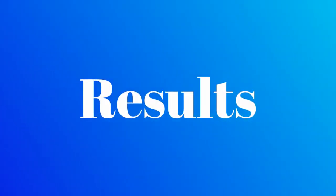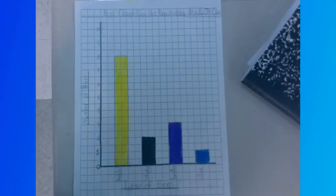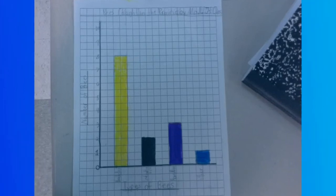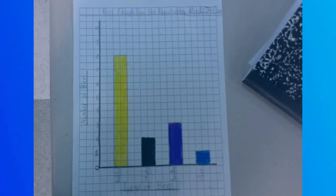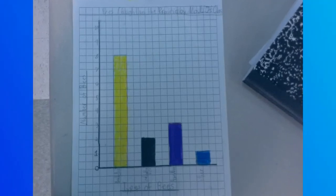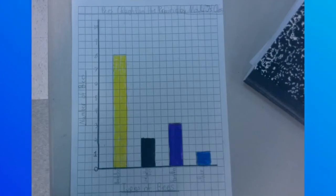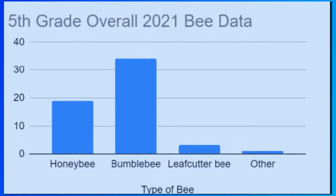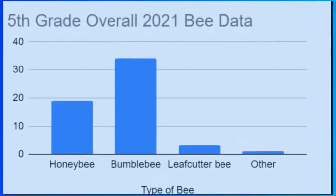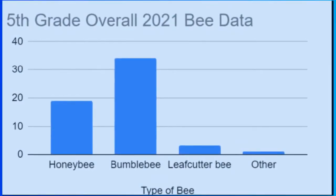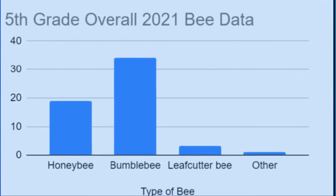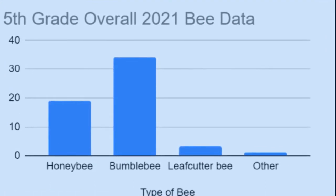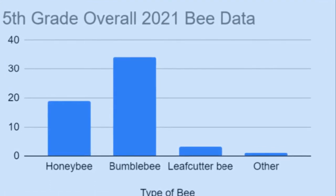Results. The most common bee trapped by our class was the bumblebee. Our class also trapped two leafcutter bees and three honeybees. The entire Weaver Lake fifth graders caught more bumblebees than any other type. The prairie traps a lot of bumblebees.